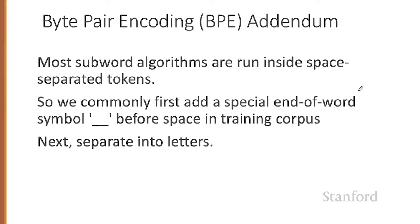There is an addendum to the BPE algorithm: in practice, most subword algorithms are run inside space-separated tokens. So we commonly first add a special end-of-word token symbol — I'll use underbar to represent that — before each space in the training corpus, before we separate into letters. So let's walk through an example.